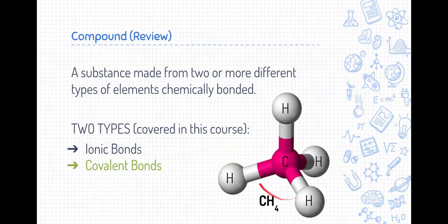Here's an example of a compound right here, CH4. This is a molecule made of many elements stuck together. Now, the two types of compounds we are covering in this course are ionic compounds and covalent compounds, made of ionic bonds and covalent bonds, respectively.